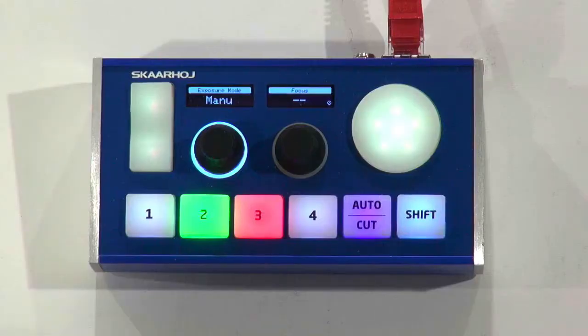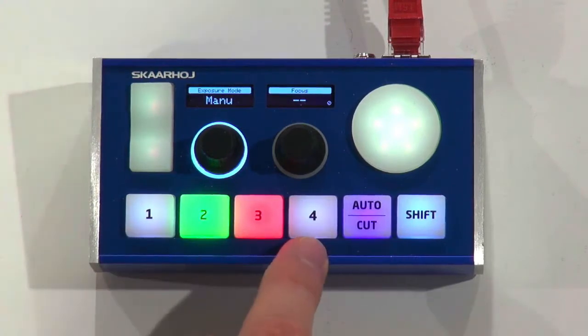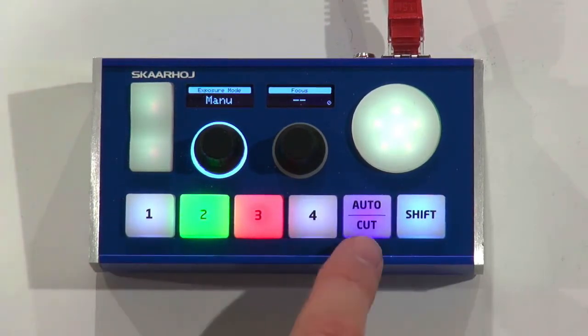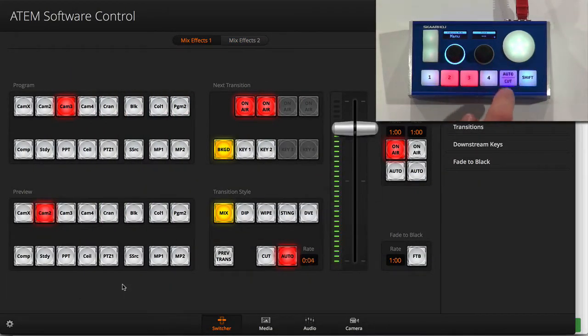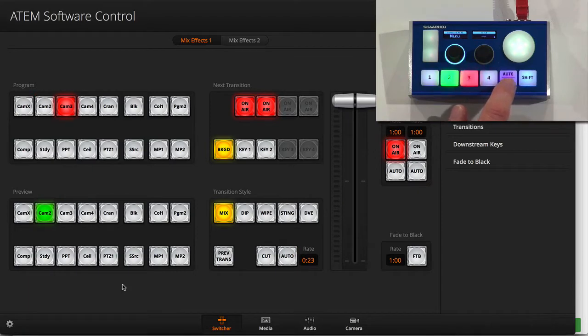So again, if you look at the keypad, you see we have one to four, which would be like four cameras for nice little small production. And then we have the cut auto button. By the way, auto is what you get when you press the upper edge of the button because this is the four-way button. So the lower edge is cut. The upper button is auto. And that's how it works with four-way buttons. They are so flexible.